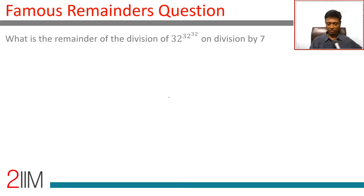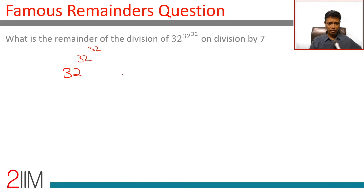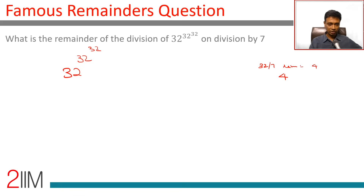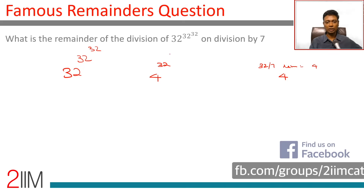We're going to solve this question: what is the remainder on division of 32 power 32 power 32 when you divide by 7? To start with, 32 on division by 7 leaves a remainder of 4. So this problem is the same as 4 power 32 power 32 divided by 7.